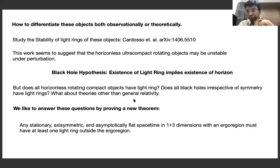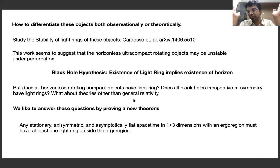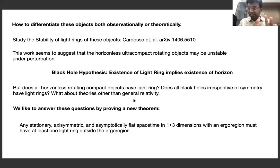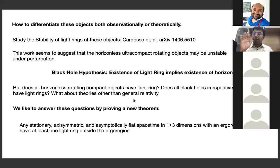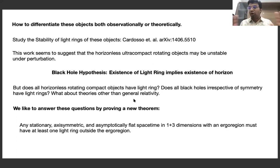What we propose is a new theorem: any stationary axisymmetric asymptotically flat space time in four dimensions which has an ergo region must have at least one light ring outside the ergo region. Any object which develops an ergo region — it need not be a black hole, it need not have an event horizon — as long as it has an ergo region, there must be a light ring outside it.